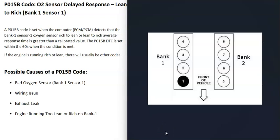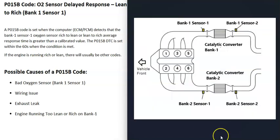If you have a V6 or V8 engine, you're going to have two banks. Bank one is always the side of the engine with the number one cylinder. Google your engine's cylinder location or firing order to locate it — that side is bank one, and the opposite is bank two.